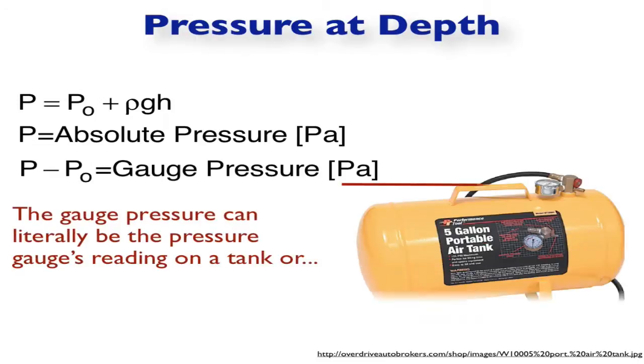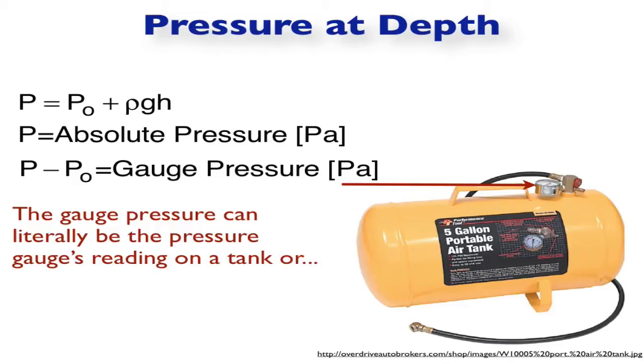Now there's something else called the gauge pressure, and the gauge pressure is relative to inside to outside. For example, on a portable tank of air, this is something you might use to fill up a ball or fill up a bike tire or any kind of compressor.